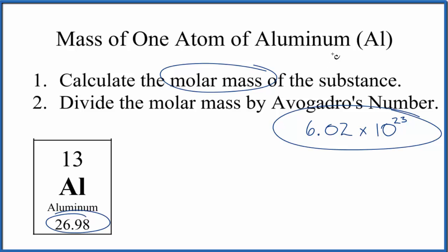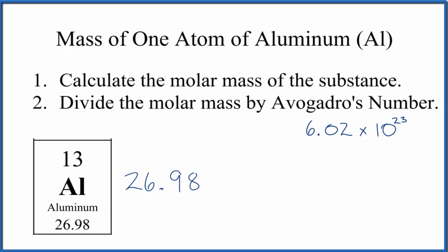This will be an average aluminum atom since this is the average atomic mass. Let's do that. So we take the atomic mass of aluminum, that's 26.98, and you can think of the units as grams per mole.